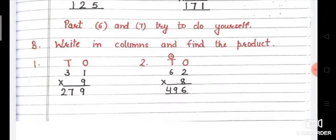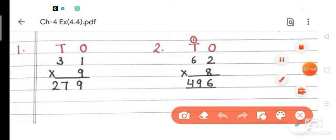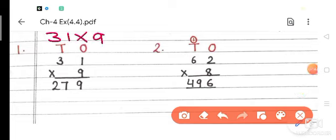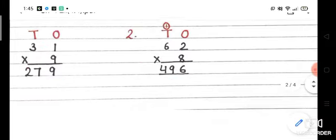Come to Part B: write in columns and find the product. When the question says 'write in columns,' arrange the digits properly as ones and tens. First question: 31 multiplied by 9. Nine 1s are 9, and 9 3s are 27. Answer is 279. Second: 62 multiplied by 8. Eight 2s are 16, write 6 down, carry 1. Eight 6s are 48, plus 1 is 49. Answer is 496.